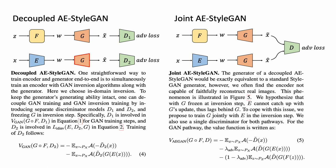Here we propose two variants for AE StyleGAN: decoupled and joined. Since autoencoders usually have inferior generation quality compared to GAN models, one straightforward way is to simultaneously train an encoder with GAN inversion algorithms together with the generator training. As illustrated, in the autoencoder training pathway, the generator is not updated, so we keep the GAN training intact.